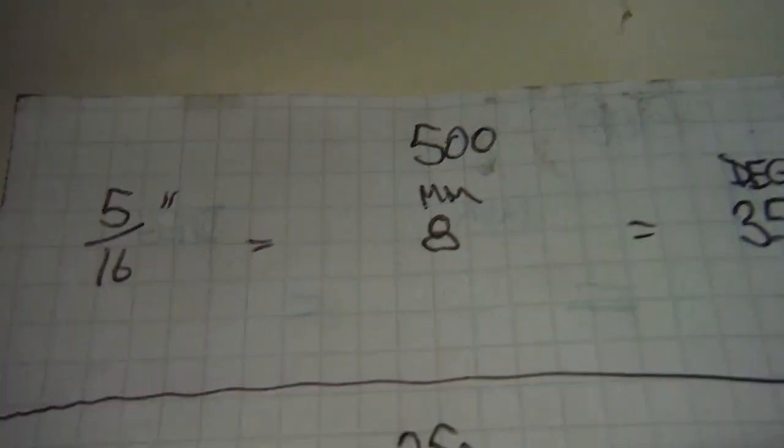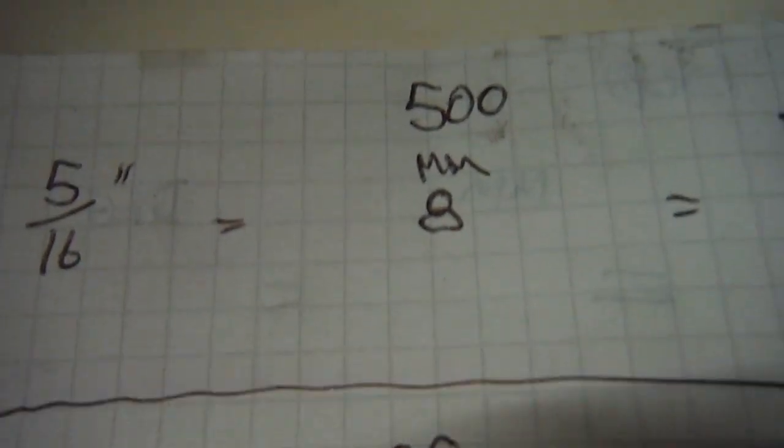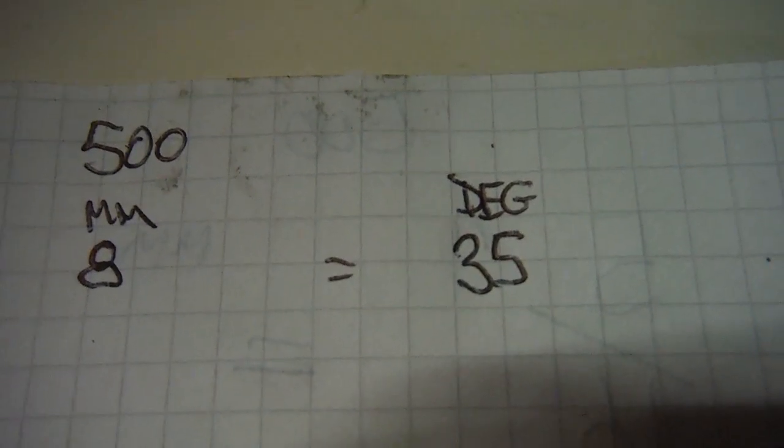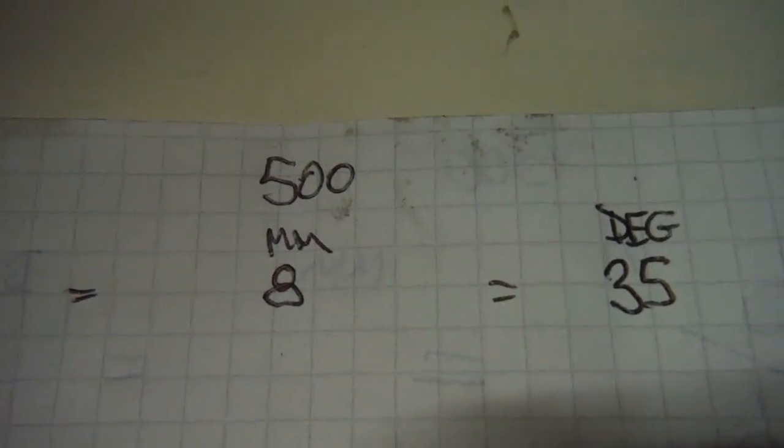For the 500, five-sixteenths of an inch, give or take a couple of thou, is eight millimeters. I've already discovered and worked out that it's 35 degrees before top dead center.